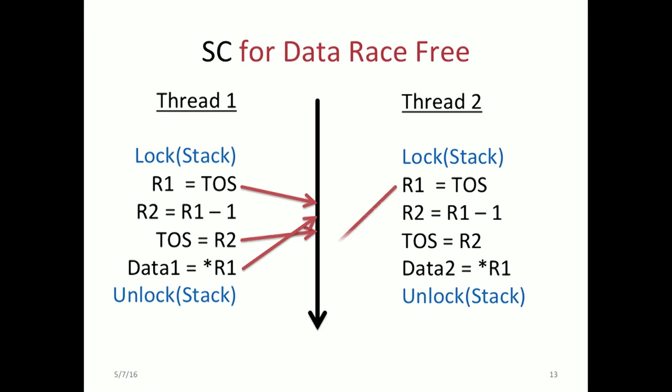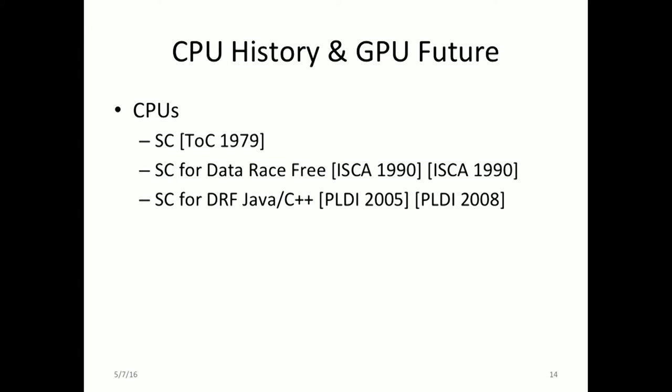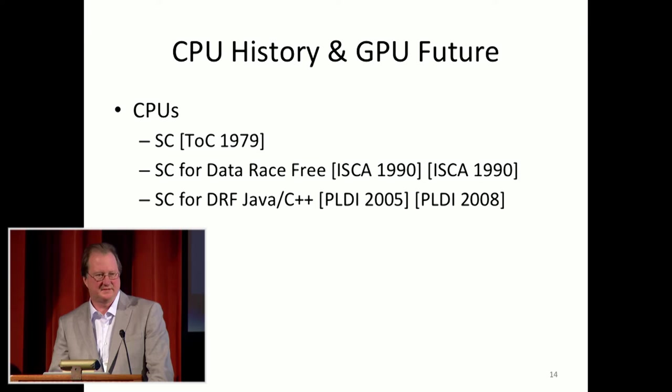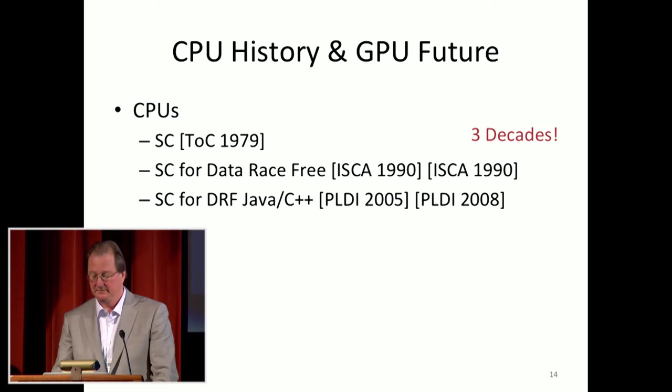An observation was made many years ago that if you're actually in a critical section, others are not looking. So maybe you can have your cake and eat it too. That's the idea of sequential consistency for data-race-free. If your program is protected properly by synchronization, then in the critical section others can't observe what you're doing — so why not do it out of order and be fast? Leslie Lamport invented sequential consistency in 1979. Sarita Adve and I defined SC for data-race-free in 1990. A mere 15 to 18 years later, Java and C++ adopted the same approach, and basically we got things under control in three decades.